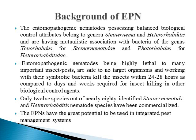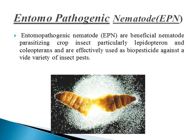Entomopathogenic nematodes are highly lethal, causing death of many important insect pests which are agriculturally important. This death of the insect can occur within 24 to 48 hours, compared to two days to weeks required by other biological controls like fungi and bacteria. Only 12 species out of nearly 80 identified Steinernema and Heterorhabditis species have been commercialized for plant protection. EPNs have great potential to be used in integrated pest management systems as a residue-free and totally chemical-free option.